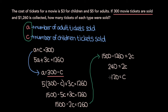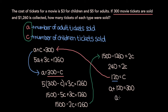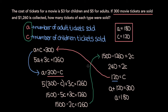Now that we've solved for C, we can plug this value back into our original equation to solve for A. We know that A plus C, which we just found is 120, is equal to 300. Subtracting 120 from both sides, we get A equals 180. So our final answer is that the number of adult tickets sold is 180 and the number of children's tickets sold is 120.